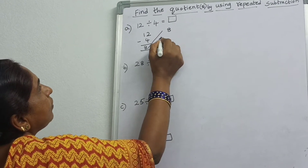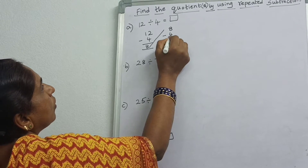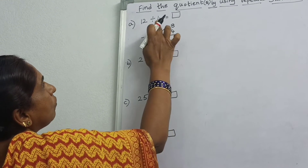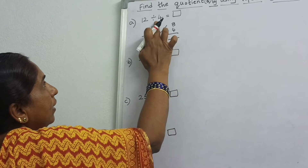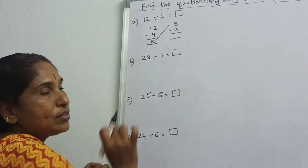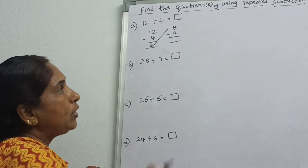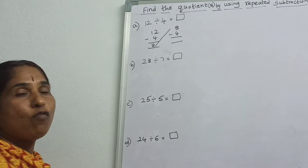After doing 12 minus 4 in the first box, you get 8. Draw one line and write 8 in the next box. Again you have to subtract with 4 till you get 0. Whatever the divisor is, you subtract that number till you get 0.